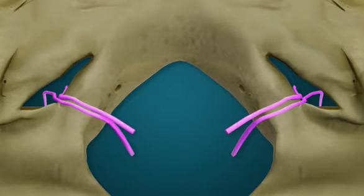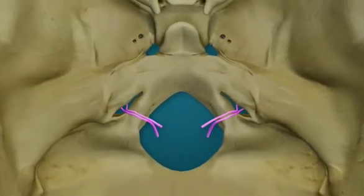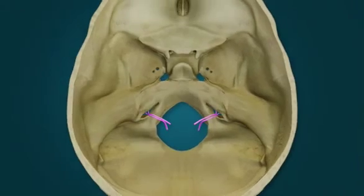These somatic motor fibers in the vagus nerve will innervate skeletal muscles in the soft palate, pharyngeal wall, and larynx.